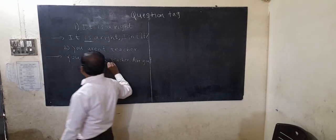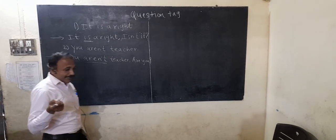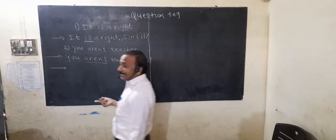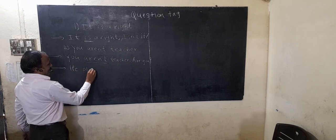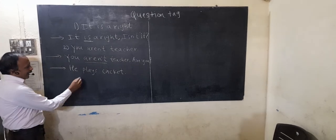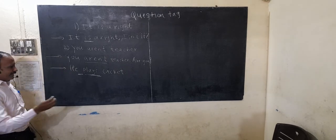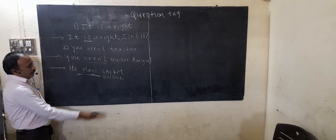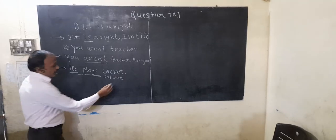The question tag uses the helping verb from the statement. If there is no helping verb, we use either 'do', 'does', or 'did'. 'Do' and 'does' are used in the present tense, while 'did' is used in the past tense. For a third-person singular subject, we use 'does'.